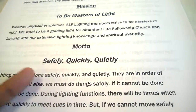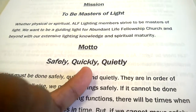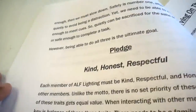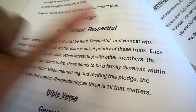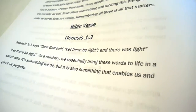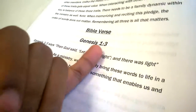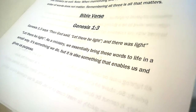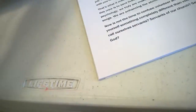Safely comes first — these are all by order of priority. Number one is safely; if we can afford to, we'll do it quickly; and if we can afford to, we'll do it quietly. We have a pledge, which is our promise of how we'll treat others in the ministry — we're going to be kind, honest, and respectful. Our Bible verse is Genesis 1:3, 'let there be light.' We also use Matthew 5:16, 'let our light so shine,' as a personal reference. The general ministry verse is Genesis 1:3, and having that biblical foundation is very important.